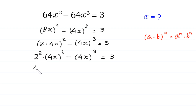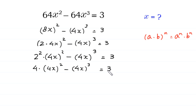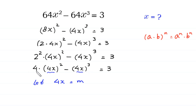Since 2² equals 4, we get 4·(4x)² minus (4x)³ equals 3. Now, we have 4x appearing in both terms, so we let m = 4x and substitute m in place of 4x. The equation then becomes 4m² minus m³ equals 3.